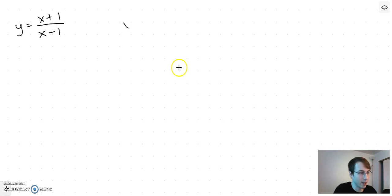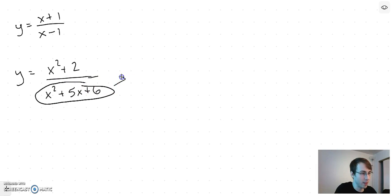So how about something like y equals x squared plus 2 over x squared plus 5x plus 6? Well, to do that we have to set this equal to zero.